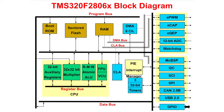In the lower left area of the block diagram you will find the execution section, which consists of a 32-bit by 32-bit hardware multiplier, a read-modify-write atomic ALU, a floating point unit, and a Viterbi complex math CRC unit.